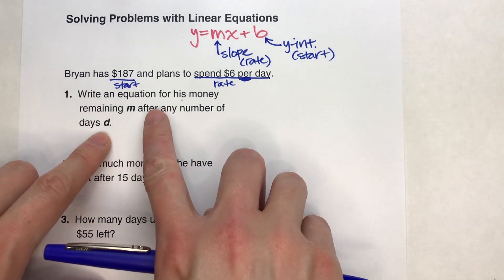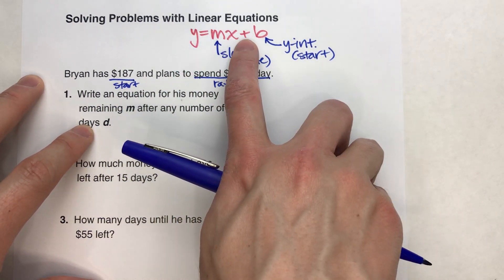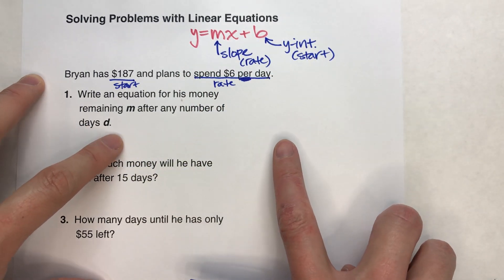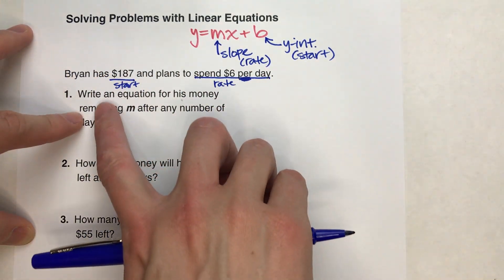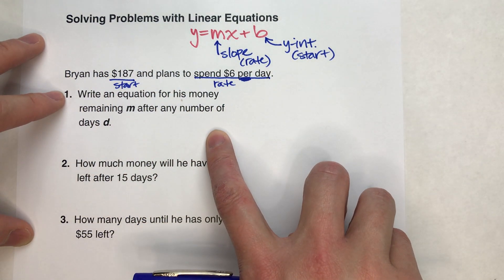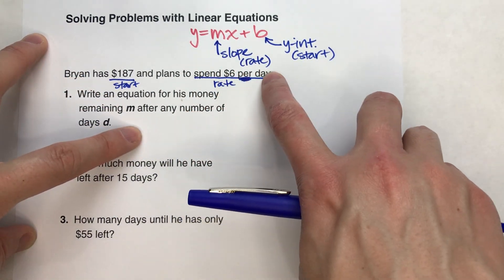So now the question becomes, if we're using the variables m and d, which one goes where? Well, if you think about the situation here, what we're trying to calculate based on this information is, we're trying to calculate how much money he has based on how many days go by.